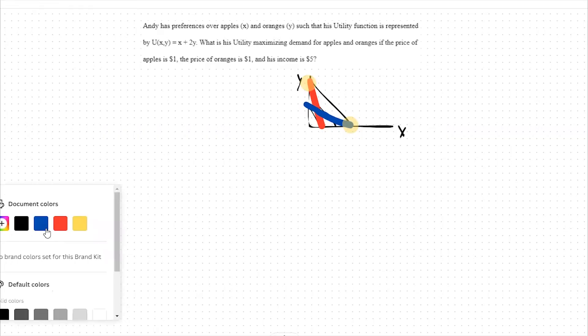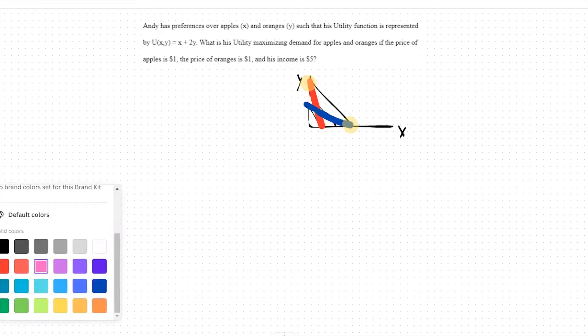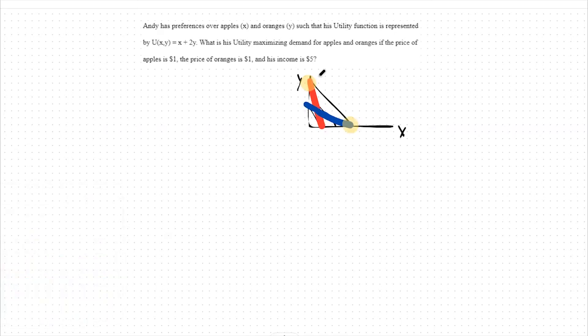Finally, in the event that the slope of our budget constraint is the same as the slope of the utility curve, as is the case with this pink line, any point along the line is a utility maximizing point.